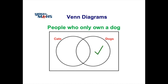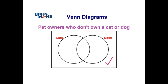The tick that's missing — the one in the middle — was previously for people that owned a cat and a dog. So the remaining tick is indicating those people that only own a dog. And if we have a tick outside the circles, that indicates pet owners who do not own a cat or a dog.